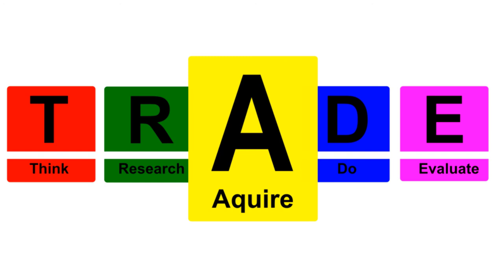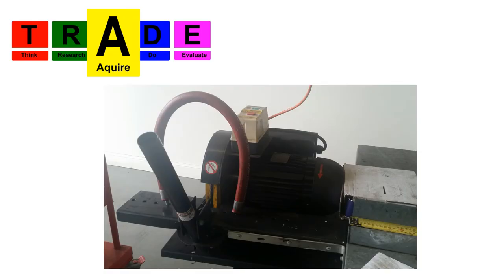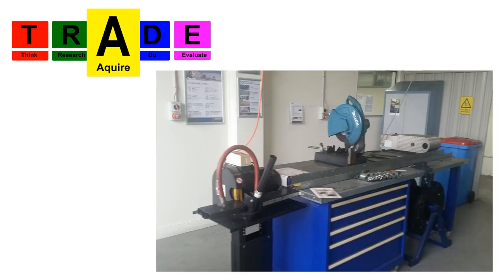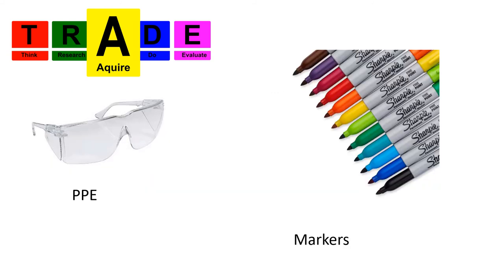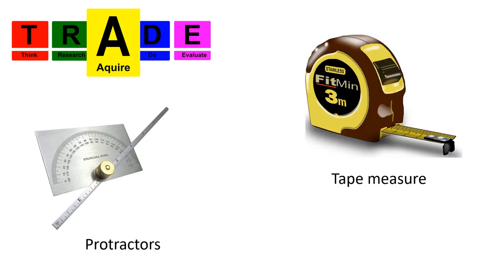The next step in the TRADE method is A for Acquire. We're going to need access to a hose cutoff saw in good condition, located in a clean, appropriate location with all necessary tools and accessories. Hose should be made available, ideally in a number of sizes — off cuts and discarded hoses can also be used for practice purposes. PPE, marking pens, tape measures for measuring hose length, and protractors for measuring the cutoff angle of the hose are also required.